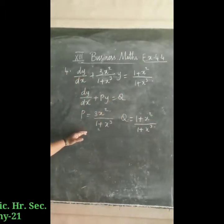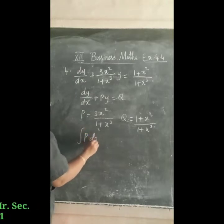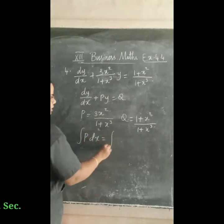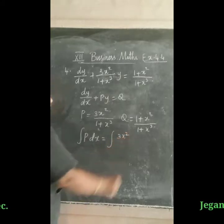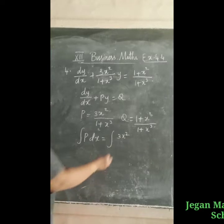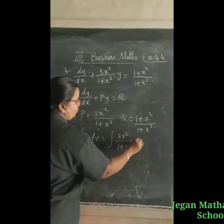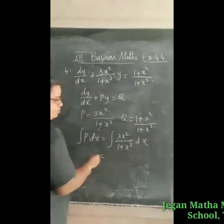Now we have to find the integral of p dx. The integral of p dx is equal to the integral of 3x² divided by (1 + x³) into dx.